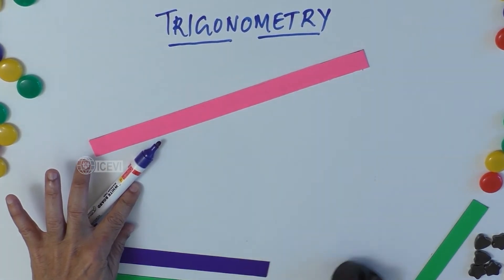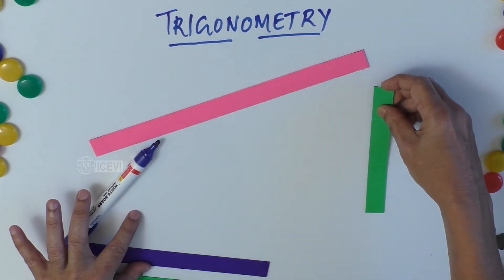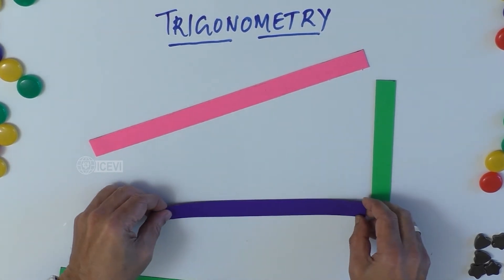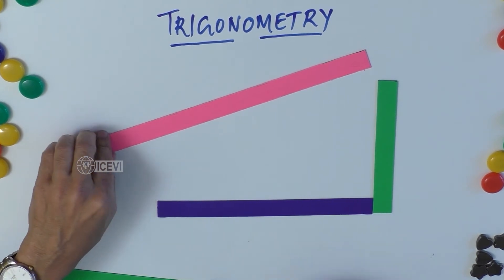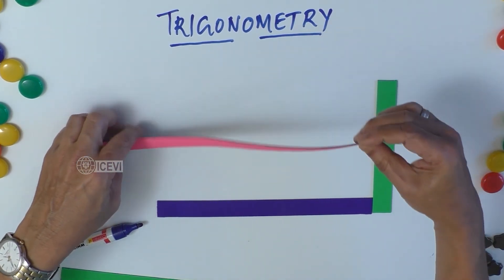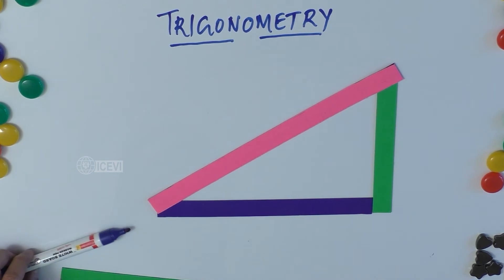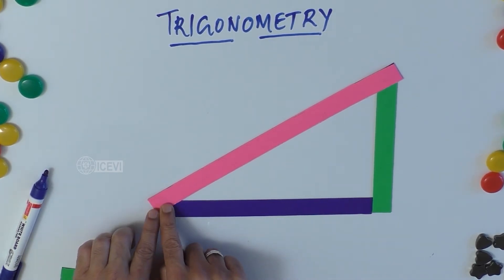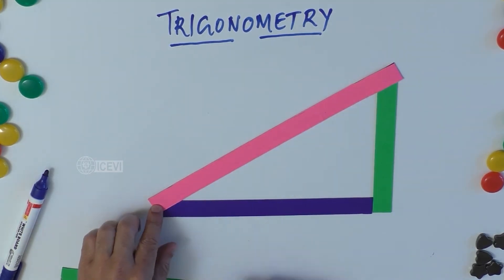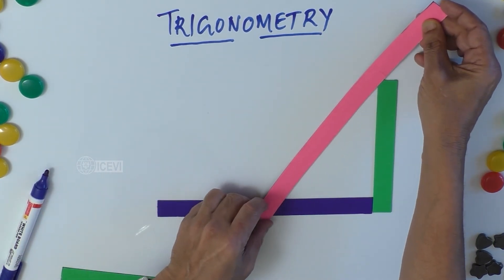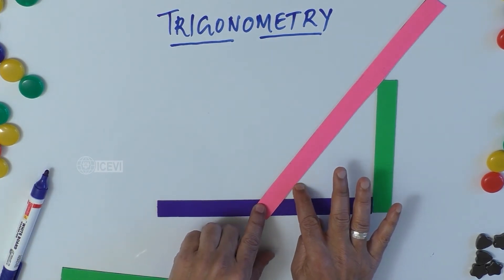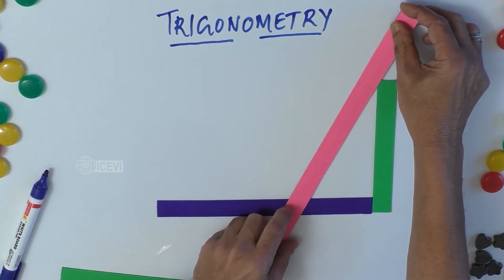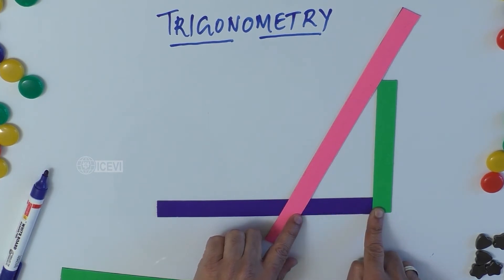Suppose we are asked to find the height of a building. We are standing at a distance from the building. When we look at the building, there is an elevation. We know the distance from the building where we are standing, and the angle at which we look at the top. Now if we come closer to the building, the angle of elevation becomes greater. When farther away, the angle of elevation is less.